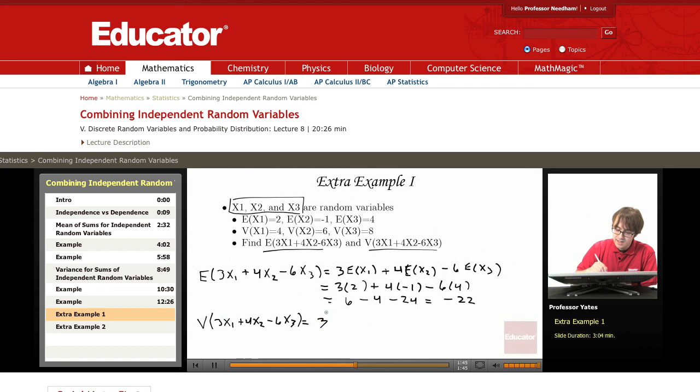So I have 3 squared times the variance of x1 plus 4 squared times the variance of x2 plus negative 6 squared times the variance of x3.